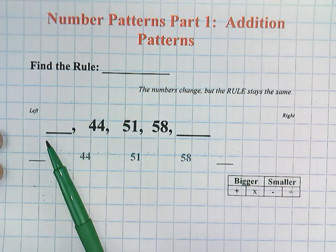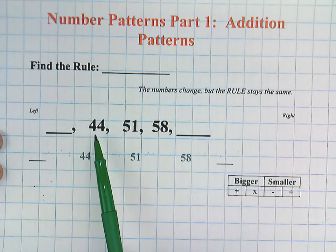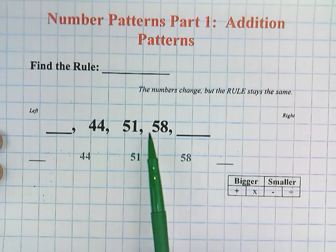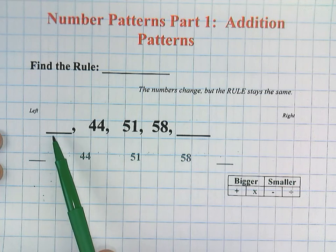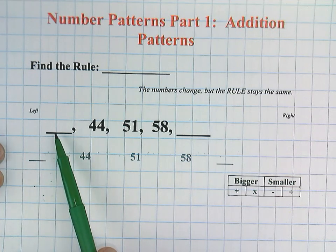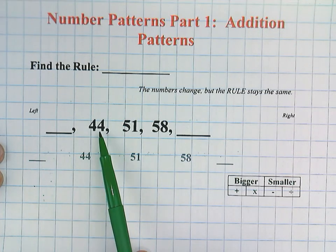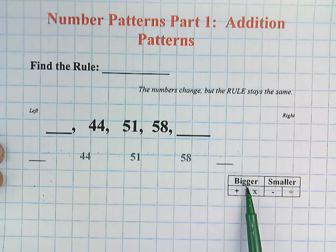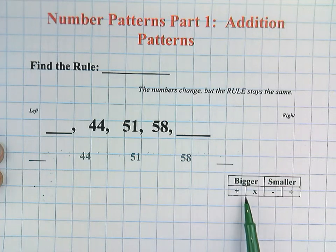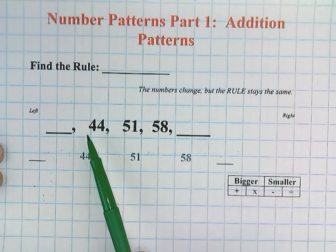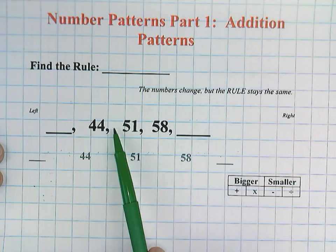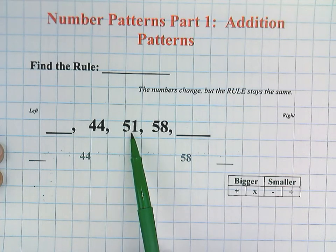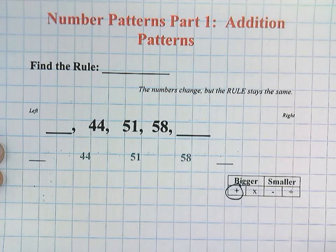Find the rule. Here we have a number pattern from left to right: 44, 51, 58 blank. You'll notice the first was left out as well. Let's start with what we have: 44 going to 51 to 58. I see the numbers are getting bigger, so it's either addition or multiplication. 44 times any number will not equal 51, so once again, this is an addition rule.